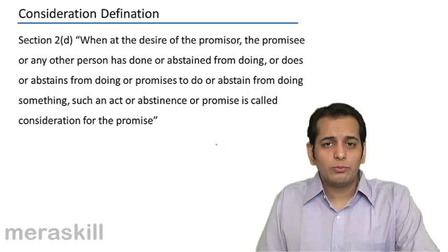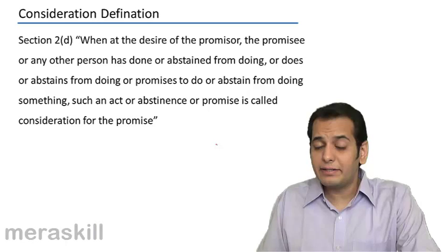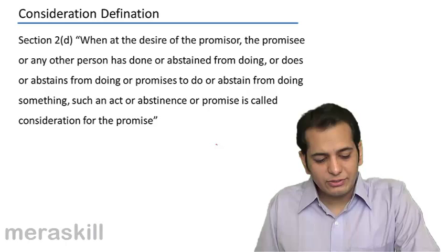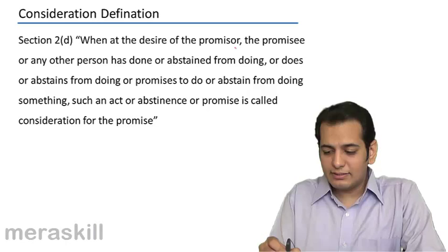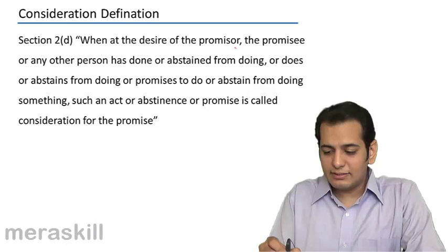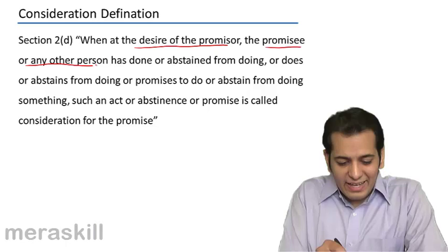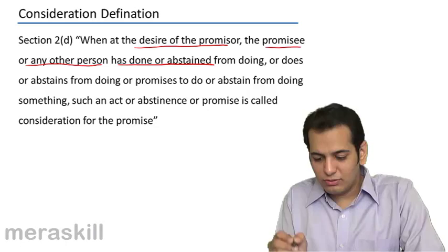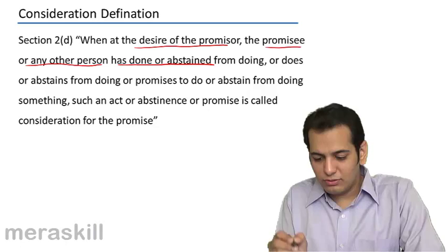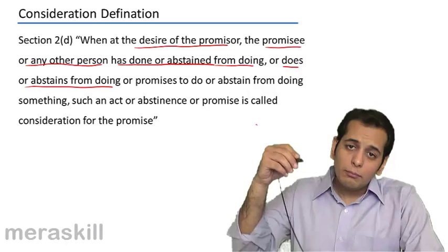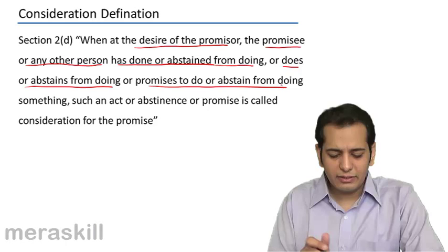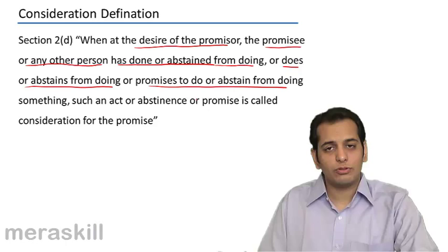This is how we generally explain consideration. However, let's study how the law, or the Indian Contract Act 1872, defines consideration. As per Section 2(d), it has been defined as: when at the desire of the promiser, the promisee or any other person has done or abstained from doing, or does or abstains from doing, or promises to do or abstain from doing something, such an act or abstinence or promise is called consideration for the promise.